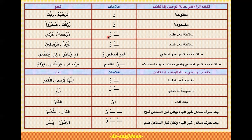وصلاً تیسری condition: Ra ساکن ہو اور اس سے پہلے فتح (زبر) آئے تو Ra موٹا پڑھا جائے گا۔ مثلاً 'مَرْحَمَت' میں Ra پر سکون ہے اور اس سے پہلے زبر ہے، تو 'مَر' کریں گے، 'مِر' نہیں۔ اسی طرح 'آرش' میں بھی Ra ساکن ہے اور اس سے پہلے فتح ہے۔